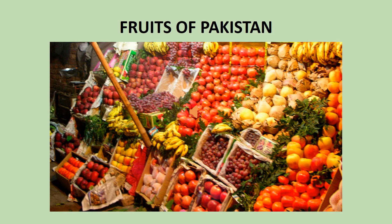If we talk about the southern part of the country, it has a tropical climate suitable for tropical fruits, where temperatures never fall too low. The plain areas — the plateau and the Indus basin of Sindh and Punjab — are suitable for subtropical fruits. The mountainous areas of KP and Balochistan are favorable for all types of temperate fruits.